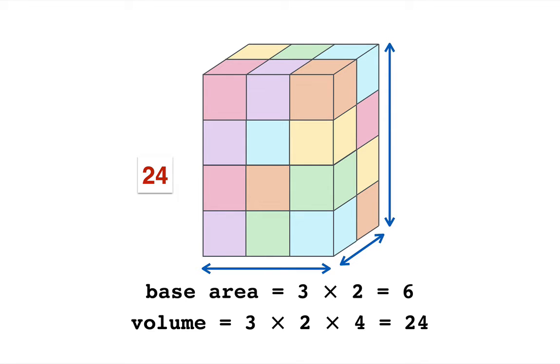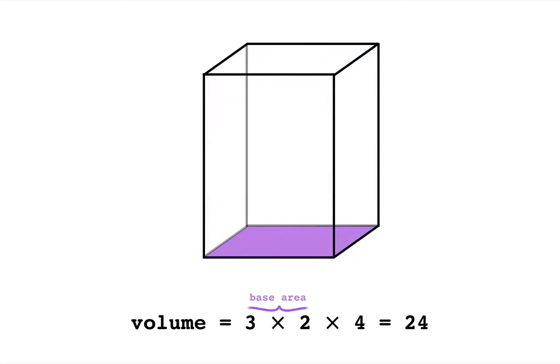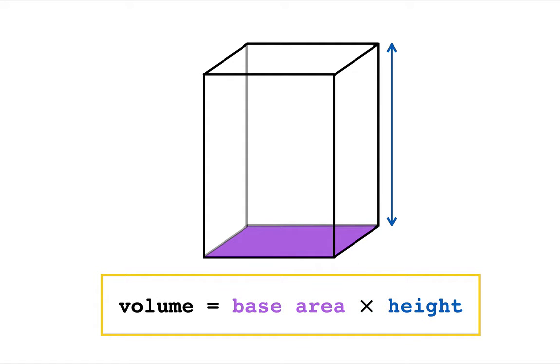What's going on here is basically it's a consequence of the way we're defining volume and area and length that these nice properties hold. In this case the base area is 3 times 2, which is 6. So what we want to take away from this is that the base area times the height is giving us the volume. This is the principle we want to really focus on: base area times height is volume for a box.